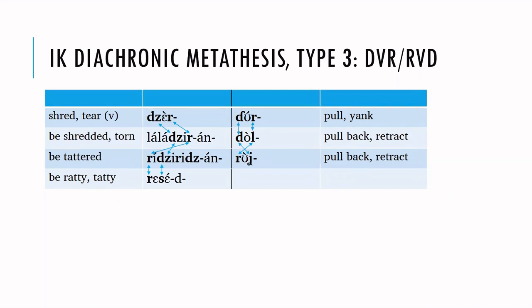In this last slide for diachronic metathesis, we have the verb 'to tear,' dzer; 'to be shredded or torn,' laladziran; 'to be tattered,' ridziridzan; and 'to be ratty or taddy,' resed. I've found cognates for dzer in a wide variety of languages in East Africa. Here we have the same CVC sequence, and in these last two it appears the CVC root was inverted. Lastly, the verb 'to pull or yank' is lur; 'to pull back or retract' is dol; and 'to pull back and retract' is rutia — metathesis may have created this set.